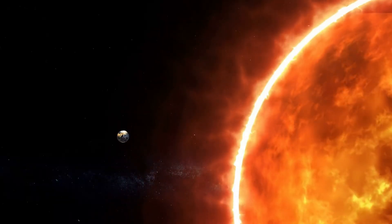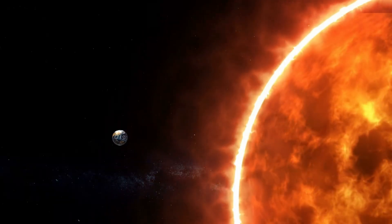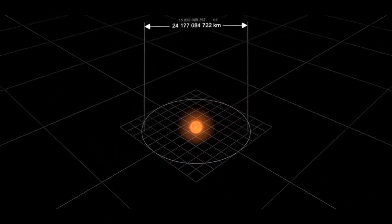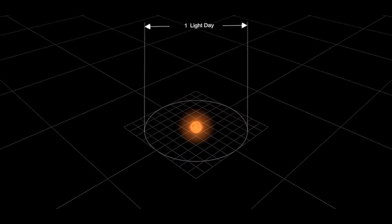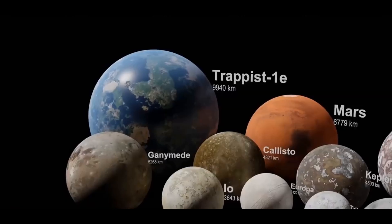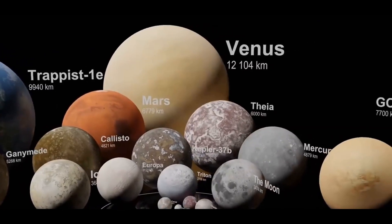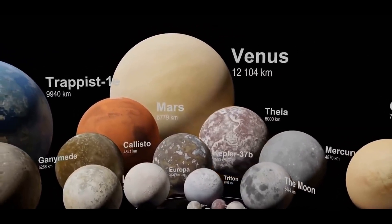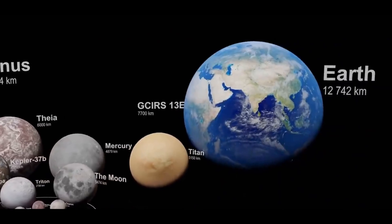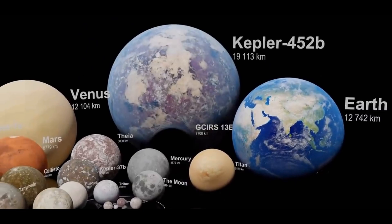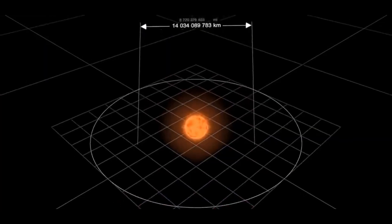First, we need to understand just how big the sun is since we're using it as a reference point. Second, the universe scale is typically expressed in two values: one is the diameter of a celestial body, and the other is its volume. Once you grasp the relationship between diameter and volume—that is, the volume of a sphere is proportional to the cube of its diameter—you'll have a more intuitive understanding of the vastness of the universe.